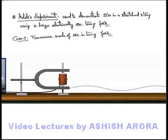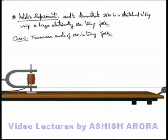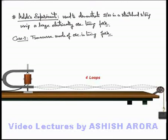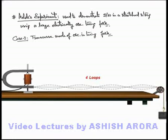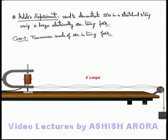Here you can see there are 4 loops being formed in the string. That means the frequency of this tuning fork is 4 times the fundamental frequency of the string, or it is matching with the 4th harmonic of the string. That's why 4 loops are being produced in the string.